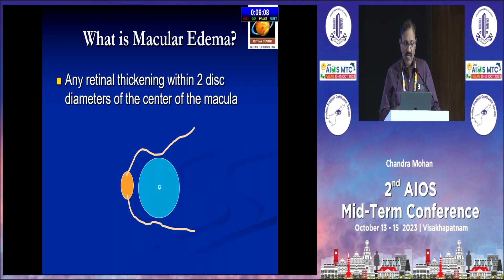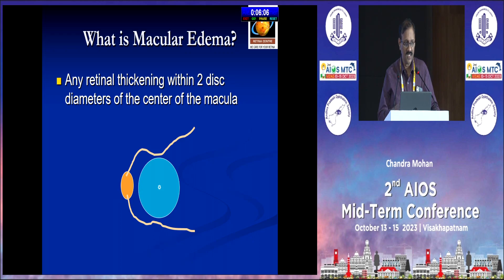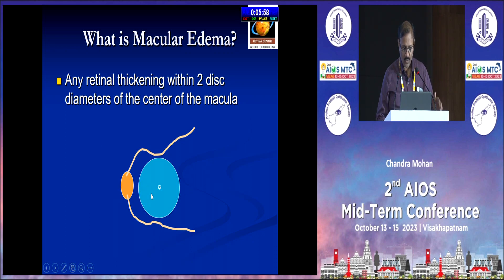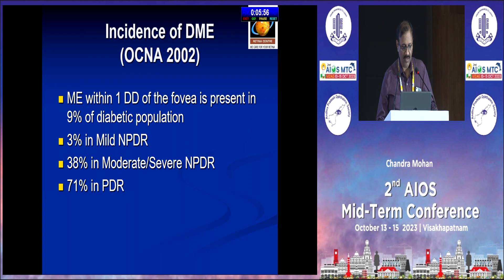I will quickly run through a few slides on diabetic macular edema since it is the most common maculopathy that we see. Any thickening within two disc diameters of the center of the fovea — basically within the fovea, macula lutea, or area centralis — is called diabetic macular edema.